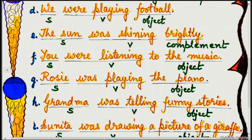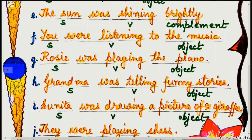Example G: Rosie was playing the piano. 'Rosie' is the subject, 'was playing' is the verb with additional -ing, and 'the piano' is the object.